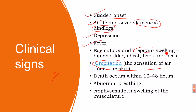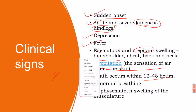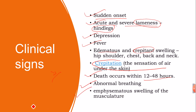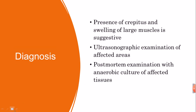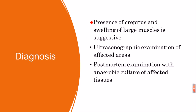Crepitant swelling occurs in the hip, shoulder, chest, back, and neck. Abnormal breathing, emphysema, and swelling of the musculature may occur within 12 to 48 hours.